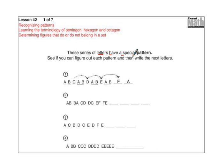These series of letters have a special pattern. See if you can figure out each pattern and then write the next letters. So on this first one here, they show you the pattern by putting this dotted line. We have ABC, and then we have AB again with a D, and then we have AB again with an E, and then AB again, and the letter you would fill in would be an F, and then you put an A because we're going to do AB again because it keeps doing AB over and over again, and after that would be the next letter of the alphabet, GAB preceding that.